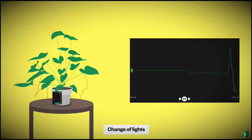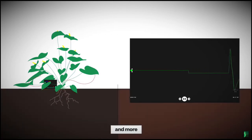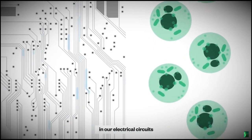This can be change of lights, change of gravity, soil conditions and more, much like individual capabilities we program for in our electrical circuits.